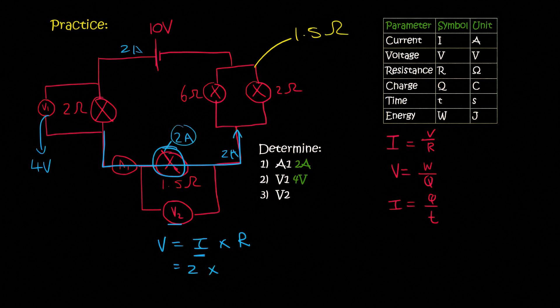Remember, the current just tells you how fast the electrons are flowing, and they're flowing at the same speed everywhere. It's only when they go into parallel that's when you have to be careful. And the resistance over there is 1.5, and so that's going to give us 3 volts.